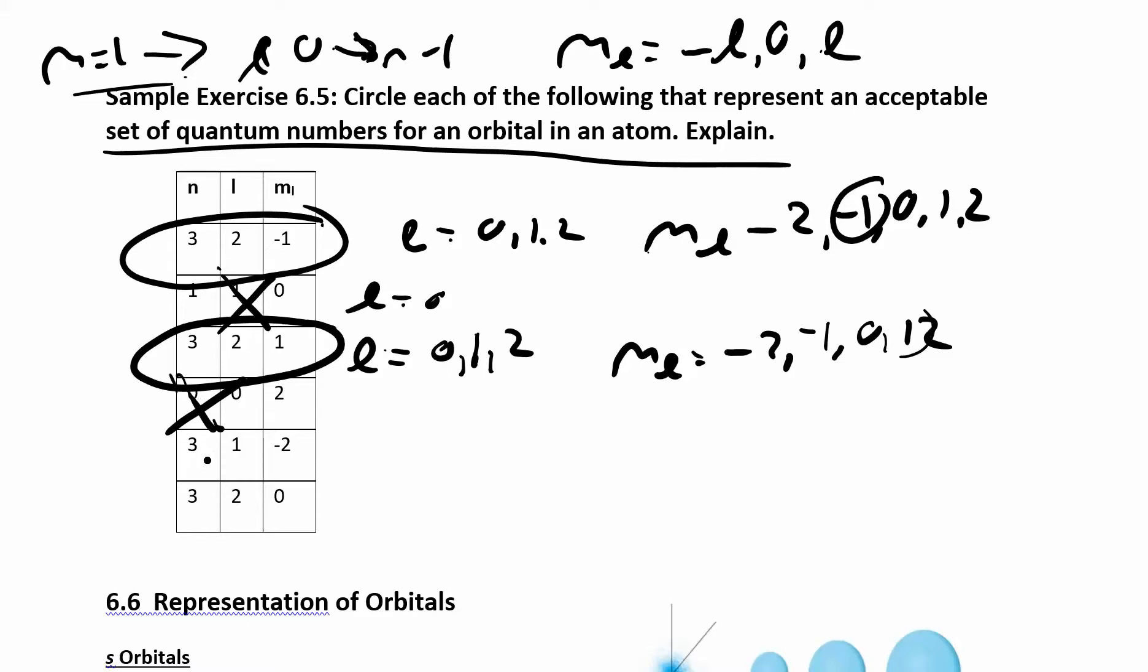So let's check for this one. If n is 3, l can be 0, 1, or 2. Good. So it's 1. That's fine. Now if l is 1, ml can be negative 1, 0, or 1. It cannot be negative 2. Even if n is 3, ml could be negative 2, but not if l is 1. So you have to look at both of these. So look at n to decide if l is OK. Look at l to decide if m is OK. So this one doesn't work.